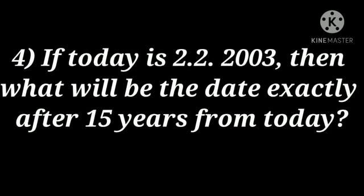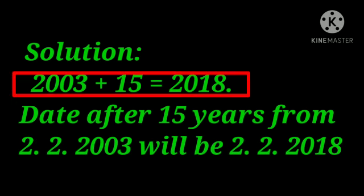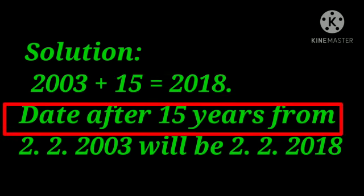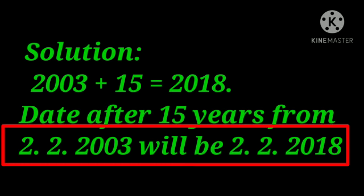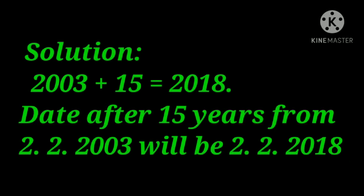If today is 2-2-2003, that is 2nd February 2003, then what will be the date exactly after 15 years from today? After 15 years the date will be the same; only the year will be different. We add 15 to 2003: 2003 plus 15 equals 2018. So the date after 15 years from 2-2-2003 will be 2-2-2018, that is 2nd February 2018.